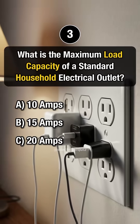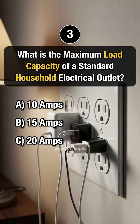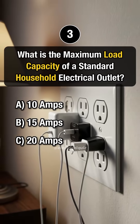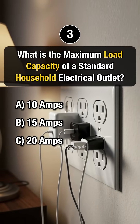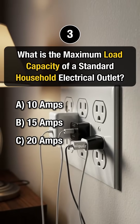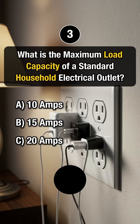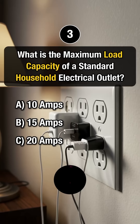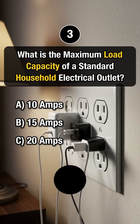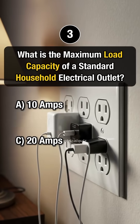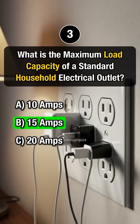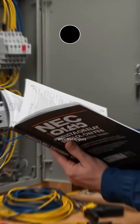Question 3. What is the maximum load capacity of a standard household electrical outlet? Answer: B. 15 amps.